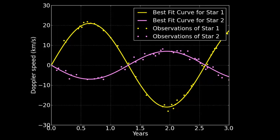This is data taken from a binary star system. On the y-axis it shows the speed of two stars that are part of a binary star system, versus time on the x-axis. When I say speed, it's a speed relative to us — positive means moving towards us, negative means moving away from us.